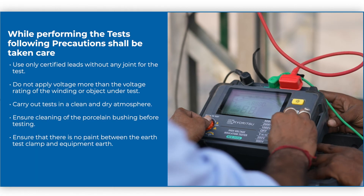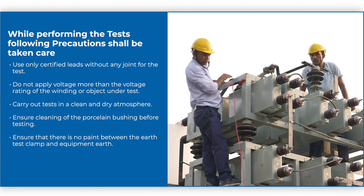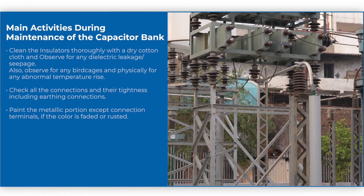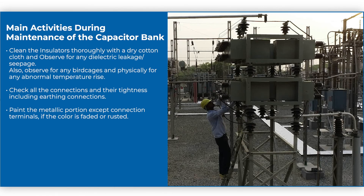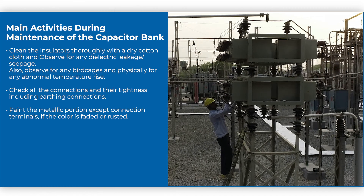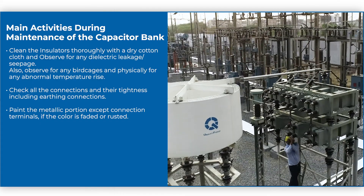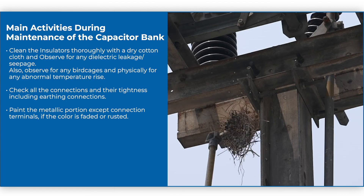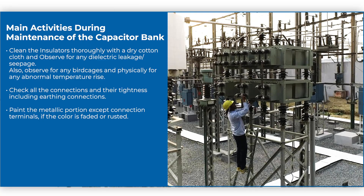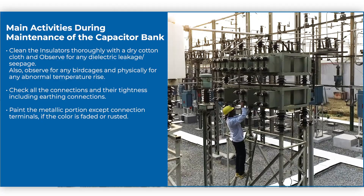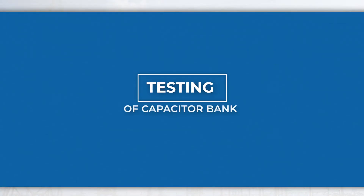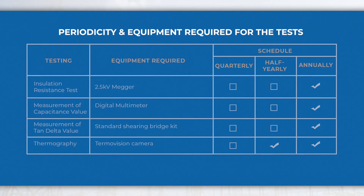Also ensure the use of personal protective equipment for safety, such as electrical grade shoes, helmets, etc. During maintenance of the capacitor bank, clean the insulators thoroughly with a dry cotton cloth and observe for any dielectric leakage or seepage, also observe for any bird cages, and check for any abnormal temperature rise. Check all connections and their tightness including earthing connections, and paint the metallic portions except connection terminals if the color is faded or rusted.